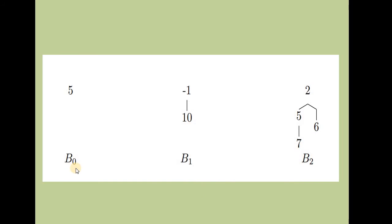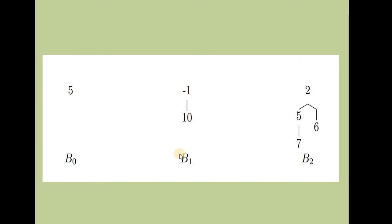Let's see with an example how we can build the binomial tree. This is B0, the binomial tree of order 0, with a single node. This is B1 where K is 1, and we have two nodes: minus 1 and 10. B1 is the combination of two B0s — minus 1 is one B0 and 10 is another. The smaller number, minus 1, becomes the root of B1, and 10 is its left child.